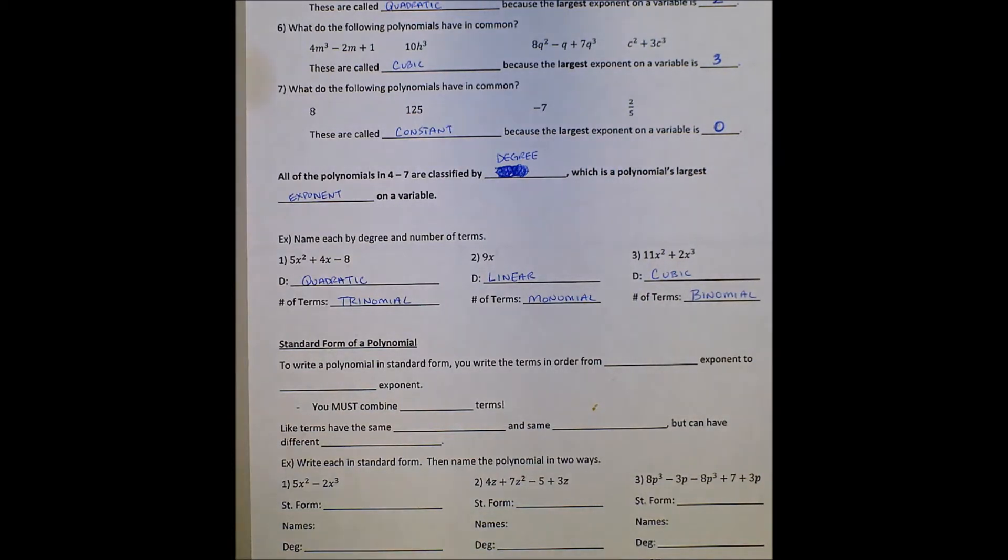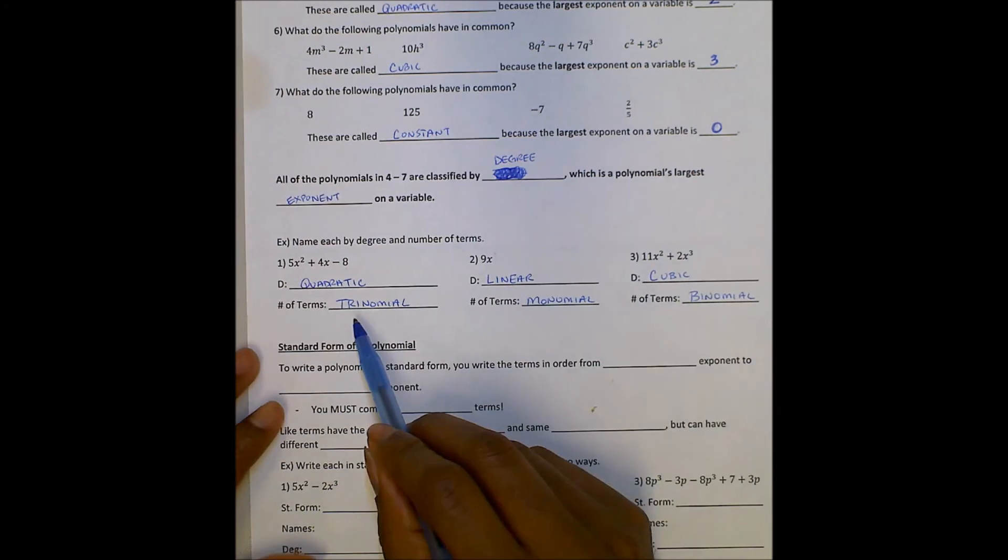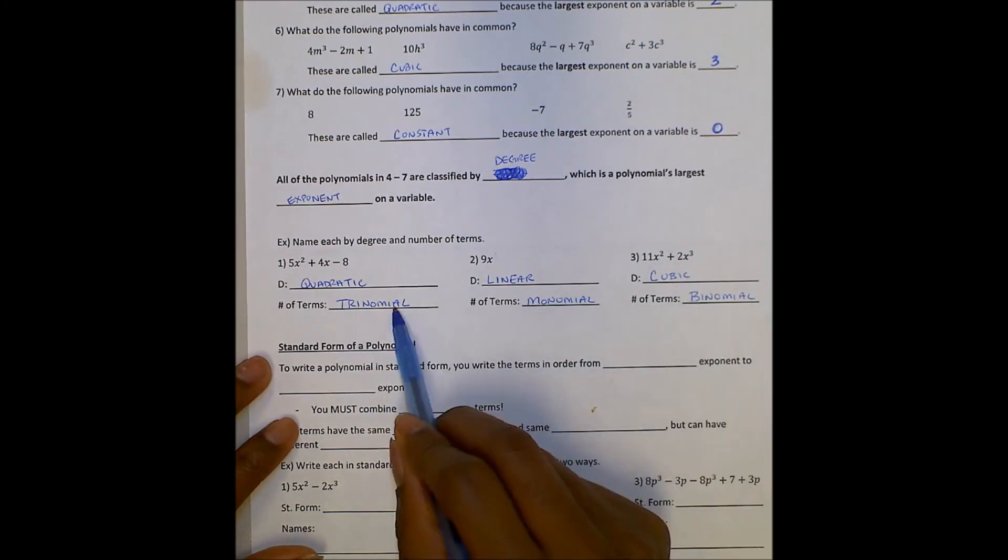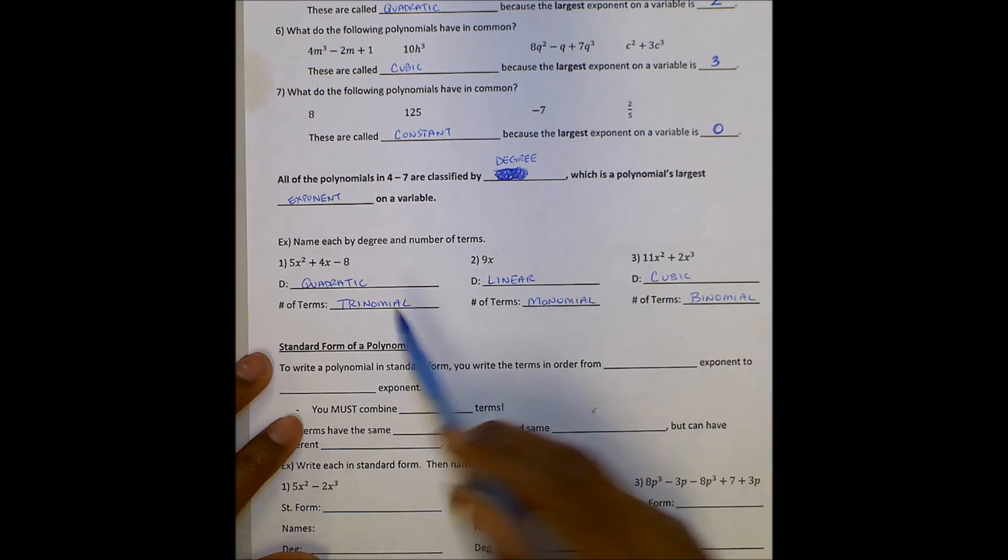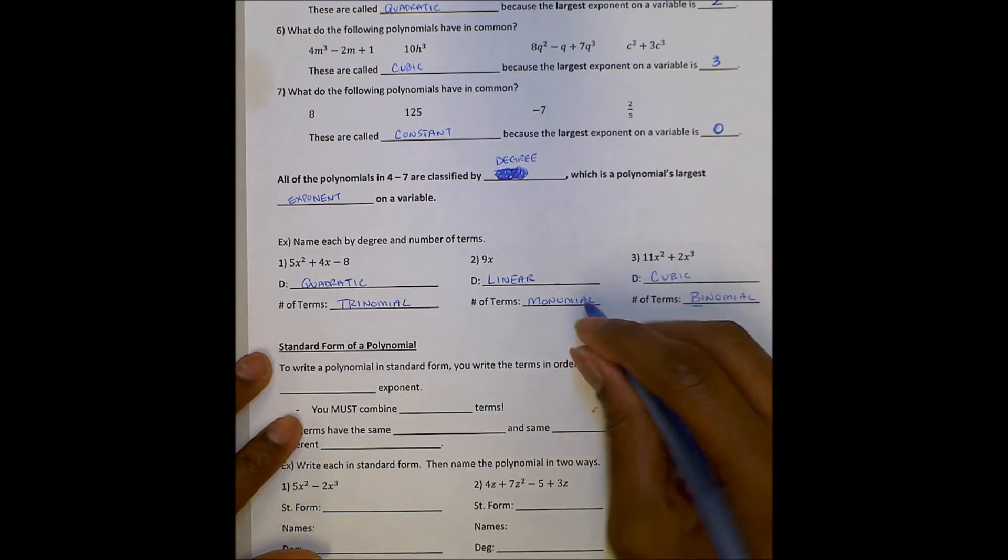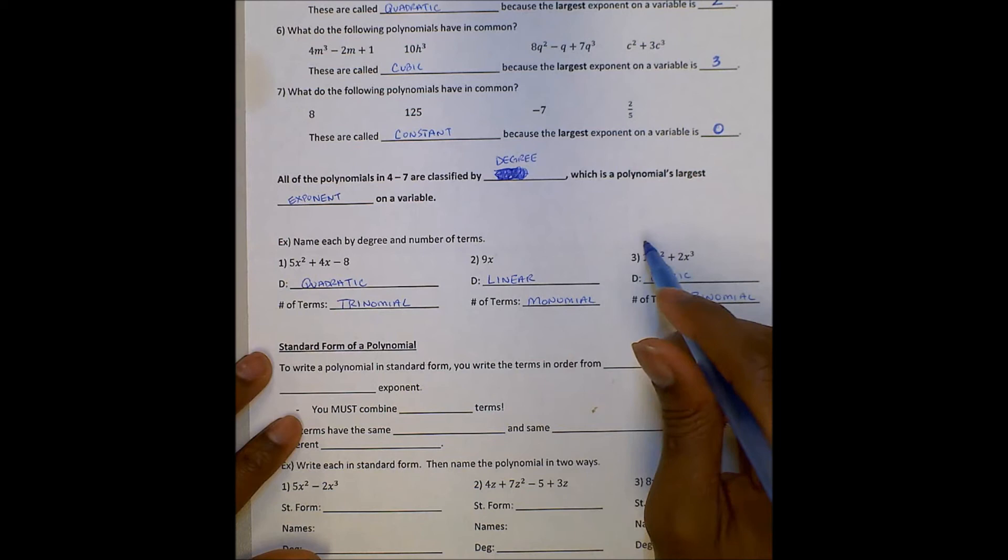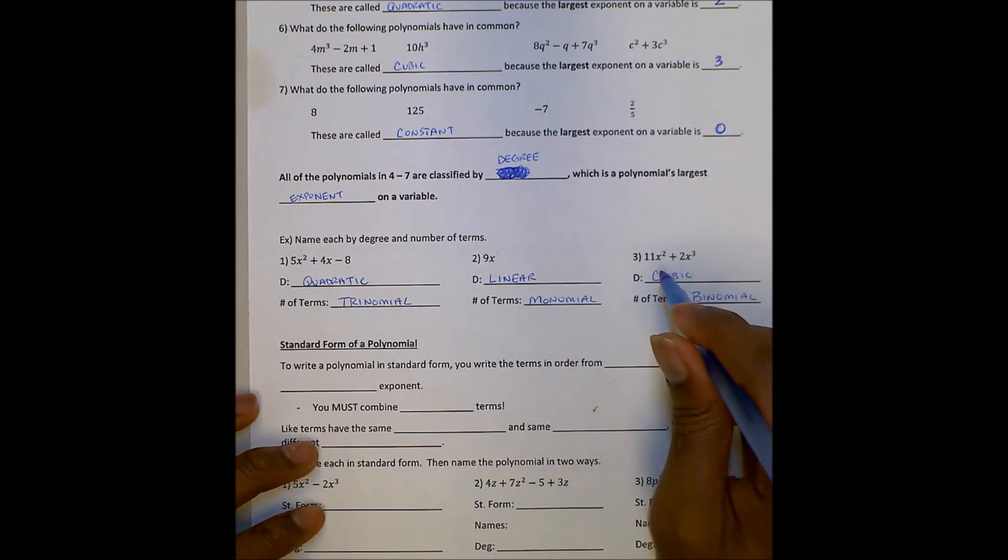Make sure that you're studying those terms, making sure that you are able to kind of recall that easily enough. For the number of terms - monomial, binomial, trinomial - I hope that comes to you easy enough by focusing on the root word. Linear, quadratic, cubic, and constant will be a little bit more to think about, but definitely manageable.